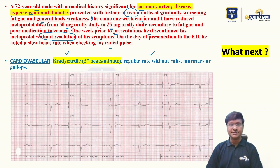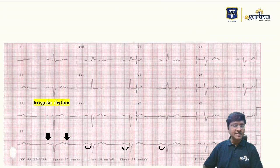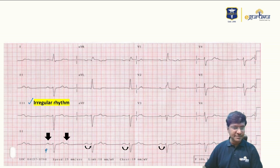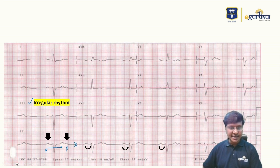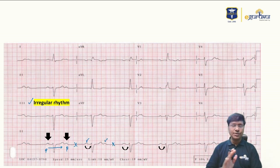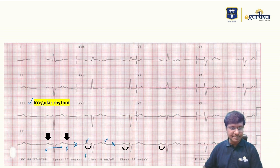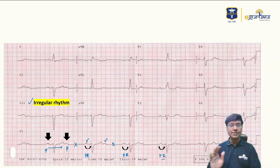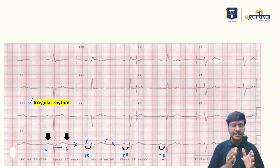So what will you do if a patient comes with this ECG? First, you should diagnose the abnormality. The individual is having an irregular rhythm. You have a P wave — a PQRST complex — then another P wave with no QRS complex, and again a P wave with no QRST complex. The ventricular complexes are intermittently absent, yet the PR interval remains constant throughout.